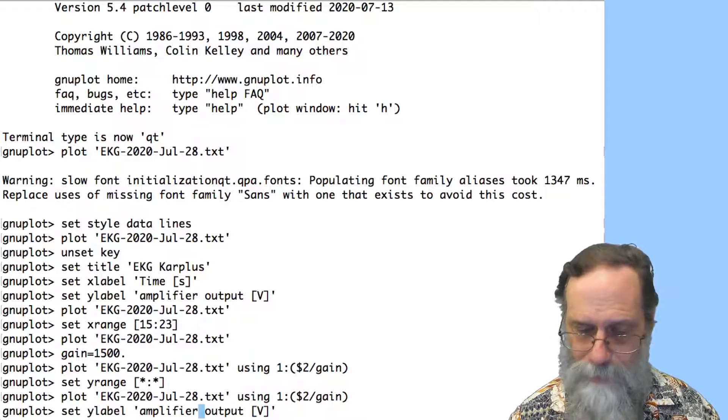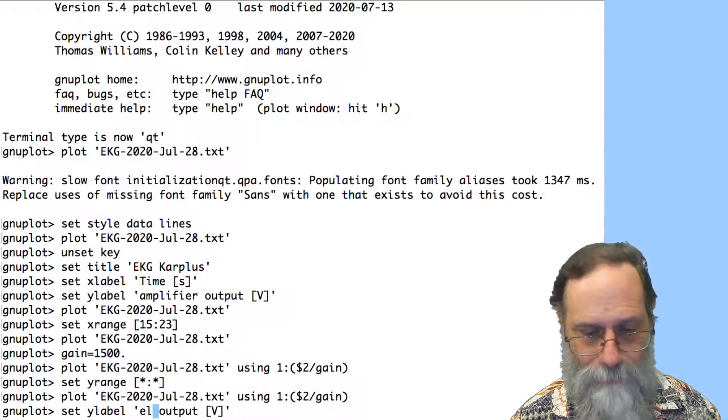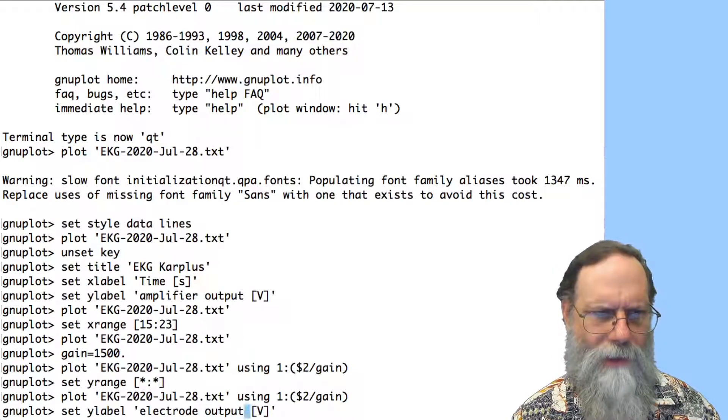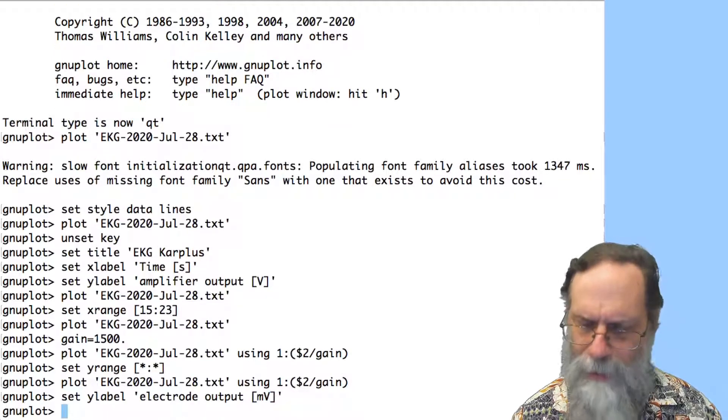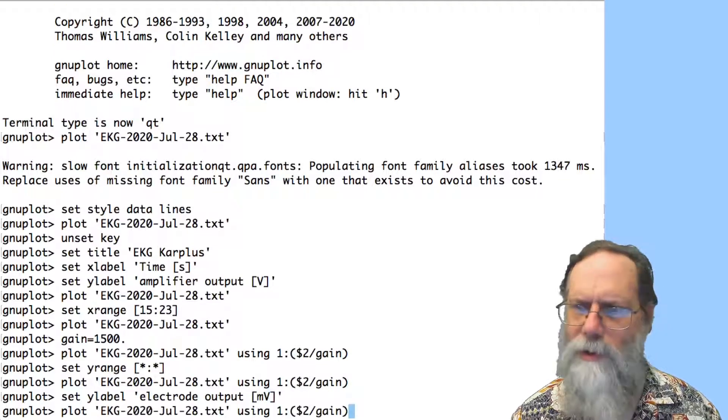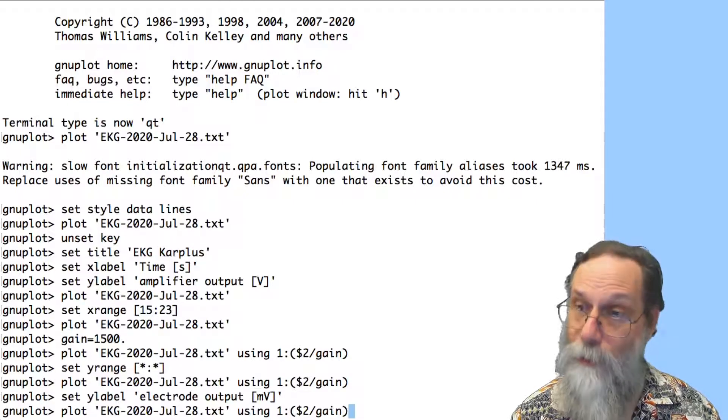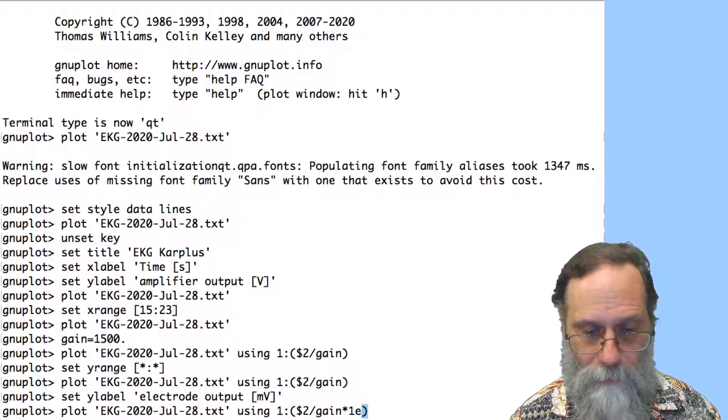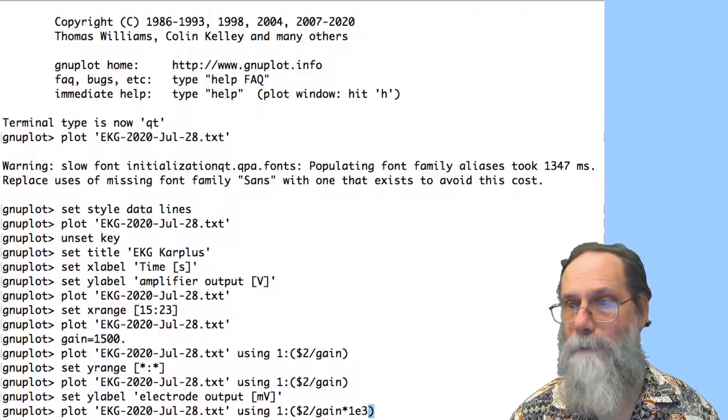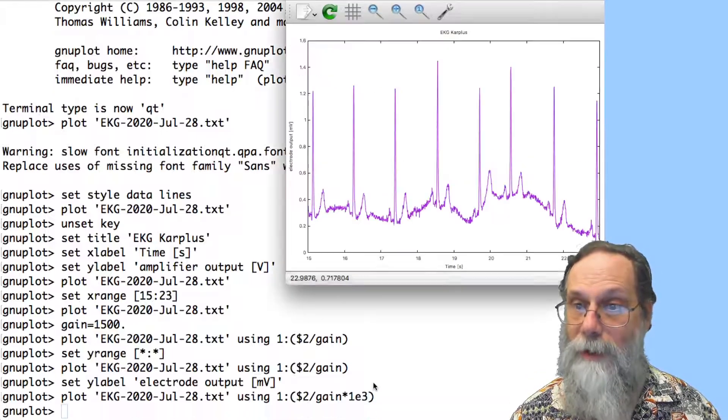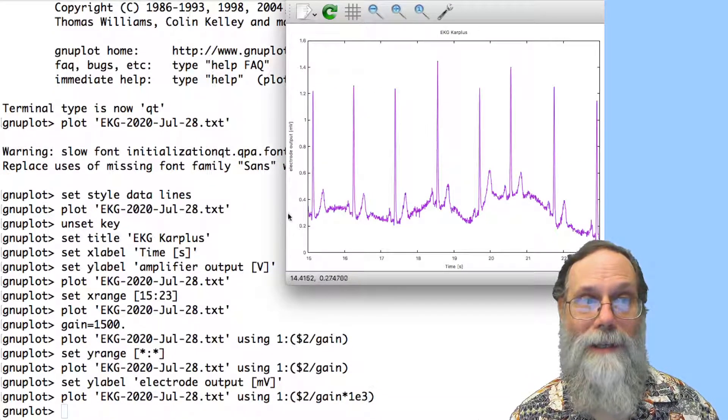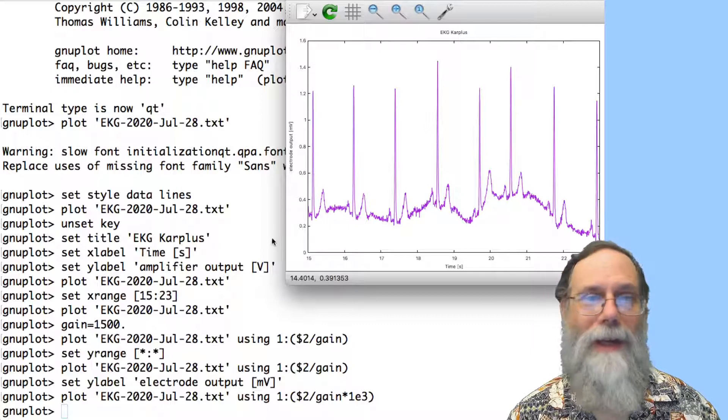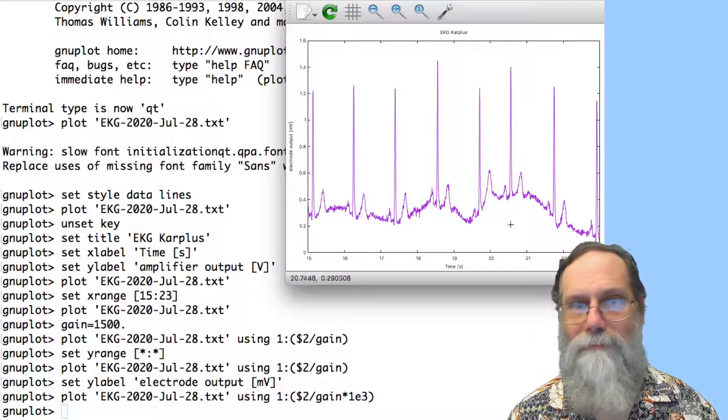So let's go back here and change the y-label. Let's make it the electrode output. And I don't want volts anymore. I want it in millivolts. So let's change that label. How do I get it in millivolts? Well, this was the electrode voltage in volts. If I want it in millivolts, I have to multiply it by 1000, 1E3. So now if I try that, I've now got something that indicates the electrode output in millivolts, and it's going nicely from 0 to 1.4, and everything looks fine.